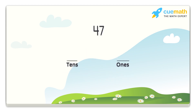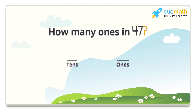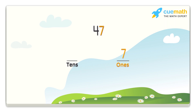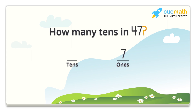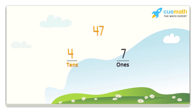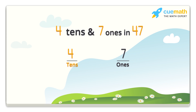Let's take the number forty-seven. How many ones are there in forty-seven? Yes, we have seven ones in forty-seven. How many tens are there in forty-seven? Yes, we have four tens in forty-seven. So we have four tens and seven ones in forty-seven.